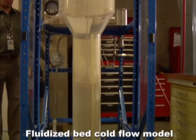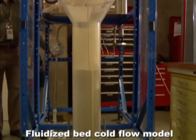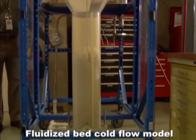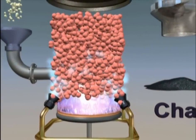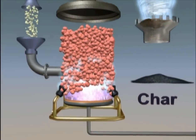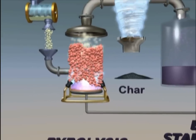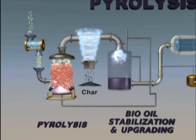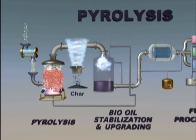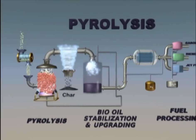The thermochemical conversion process uses heat to break down biomass into intermediates, such as gas or bio-oil, which can be upgraded into fuel and other products. One type of thermochemical conversion process is pyrolysis, a method that uses heat to decompose biomass in the absence of oxygen.